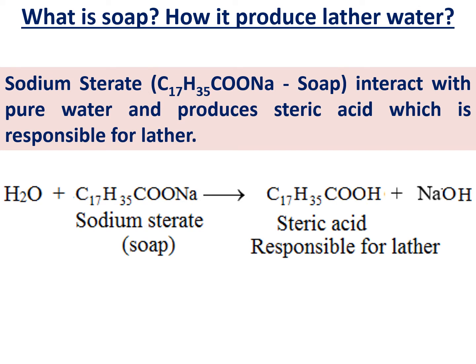What is soap and how does it produce lather with water? Hardness means the soap will not produce good lather with the water. Soap is chemically called sodium stearate — C17H35COONa. When sodium stearate interacts with pure water, it produces stearic acid, which is responsible for good foam or lather. When soap interacts with only pure water, it produces stearic acid and also sodium hydroxide — and this is responsible for the foam.